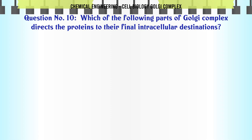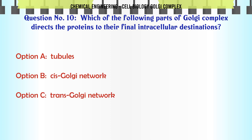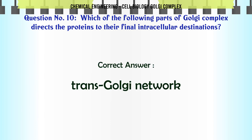Which of the following parts of the Golgi complex directs the proteins to their final intracellular destinations? A) tubules, B) cis Golgi network, C) trans Golgi network, D) medial cisternae. The correct answer is trans Golgi network.